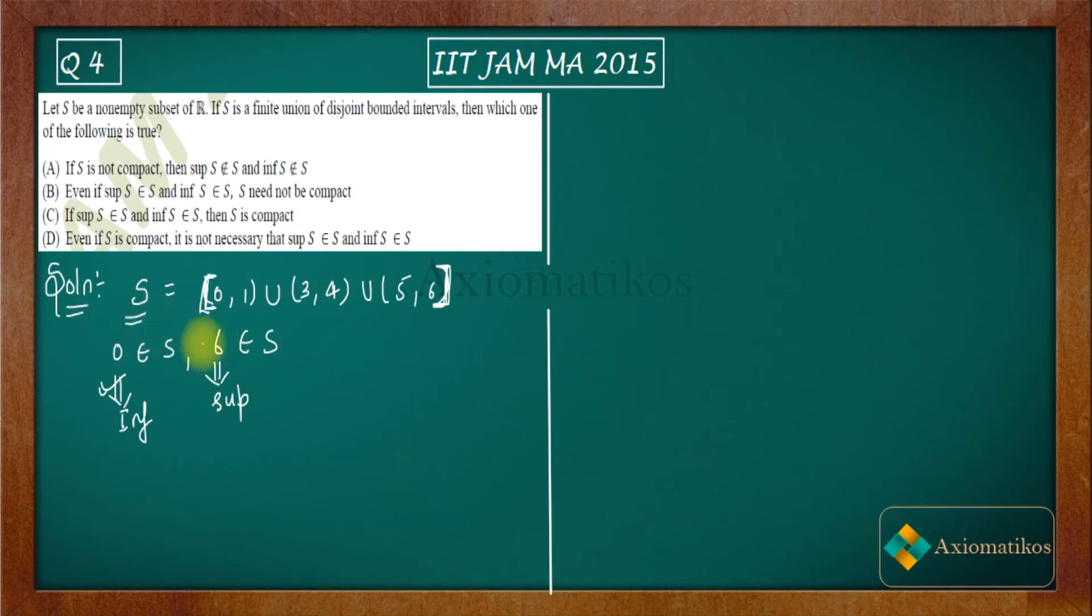No, it's not compact. Why? Because it's not closed. Now see, 1 here is a limit point but 1 does not belong to S, that means it's not closed. For our open interval, let's say (3,4), we know that 3 and 4 are limit points of it. So you can also see that 3 and 4 are limit points but they do not belong to S. From here also you can say that S is not closed. S is not closed implies S is not compact.